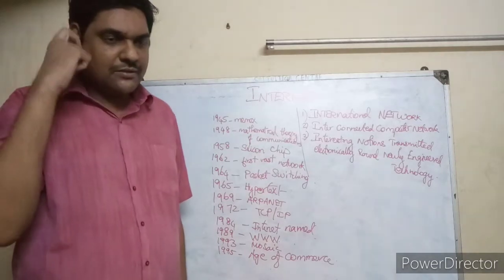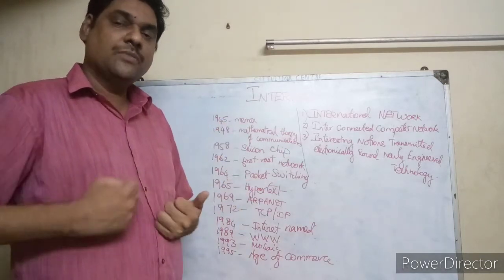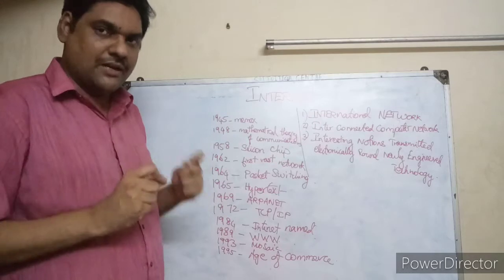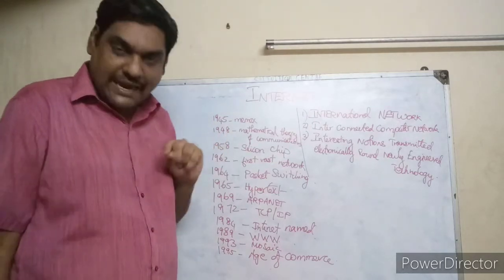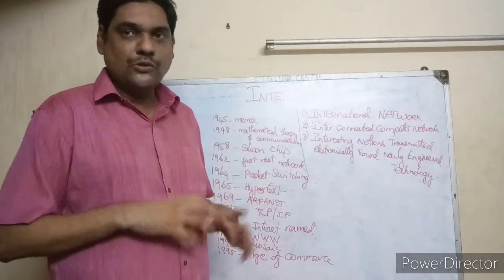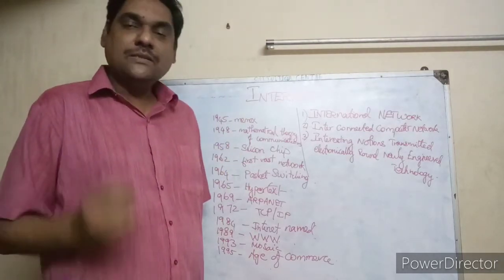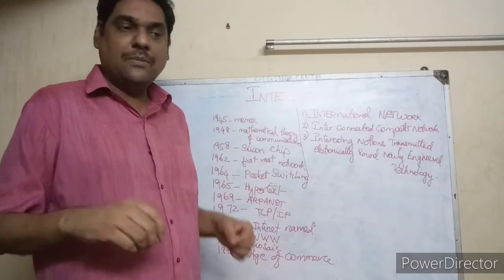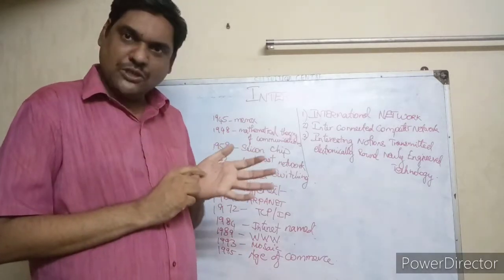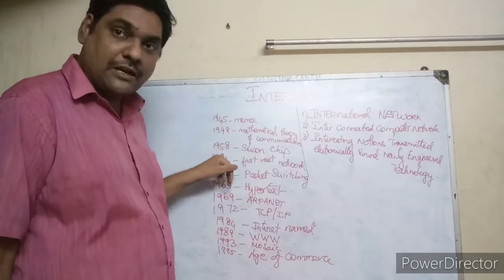Now we will go through the history of the internet. In 1945, the early concept of communication signals was introduced. In 1948, the theory of communication rules and regulations was established. In 1958, the silicon chip was invented. There are tiny chips inside computers and video games — those are called silicon chips. The silicon chip was first introduced in 1958.